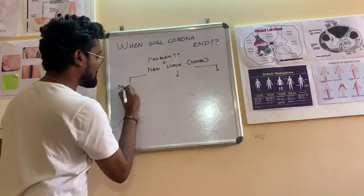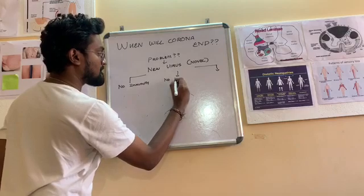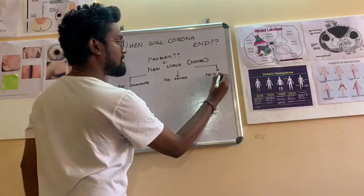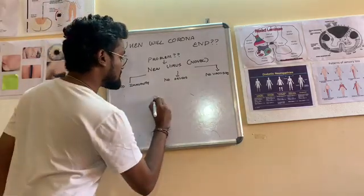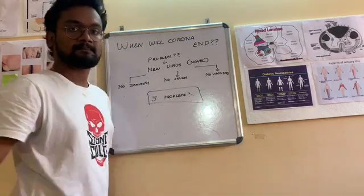So what are the three problems with the new virus? First one, there is no immunity by the body. The body doesn't know how to react. The second one is there is no drugs. And third one is there is no vaccines. So now we have to act against these three problems. Let us check this problem one by one.